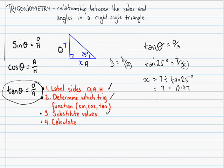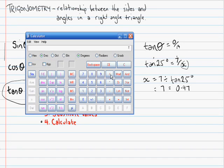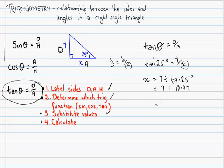So, my answer is going to be 7 divided by 0.47. So, 7 divided by 0.47 gives me an answer. So, 14.9. So, the unknown side length is 14.9. That's that bit done.